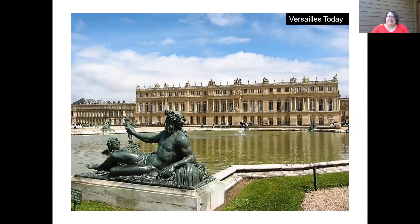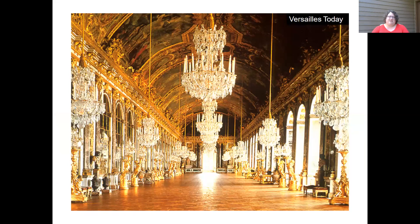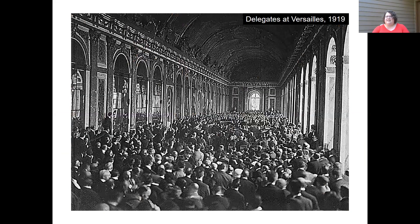This is Versailles today — remember, this is the palace where the treaty was signed. Today, if it were open, you could go visit it. This is the Hall of Mirrors where many of those representatives of the Treaty of Versailles met. And this is an image of the delegates at Versailles in 1919 — so even though there were certain major leaders, there were still lots and lots of people who showed up to listen, observe, and discuss. It was a very crowded room.